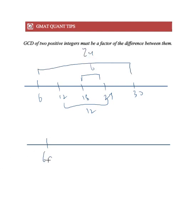Now say we have two multiples of 6 on the number line. What can we say about the distance between them or the difference between them? We can say that it must be a multiple of 6.